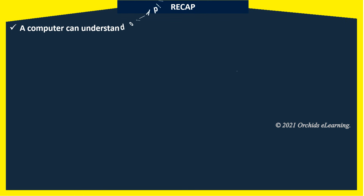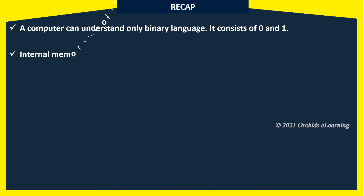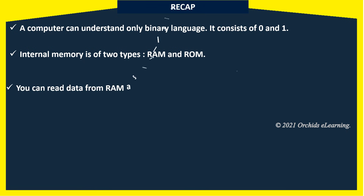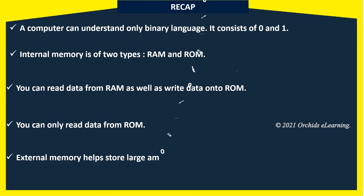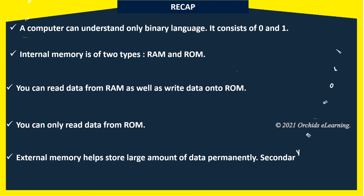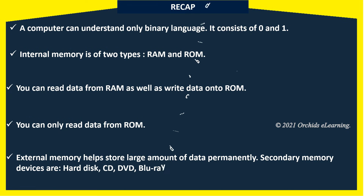Let us recap. A computer can understand only binary language, which consists of 0 and 1. Internal memory is of two types: RAM and ROM. You can read data from RAM as well as write data onto it; you can only read data from ROM. External memory helps store large amounts of data permanently. Secondary memory devices are hard disk, CD, DVD, Blu-ray disk, pen drive, and memory card.